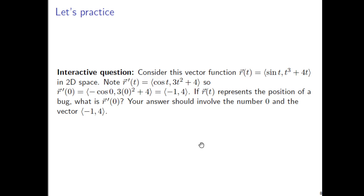Here's your interactive question. Consider the vector function sine of t comma t cubed plus 4t in two-dimensional space. Notice that r'(t) is cosine of t comma 3t squared plus 4. So r'(0) is equal to negative cosine of 0 comma 3 times 0 squared plus 4. It simplifies to negative 1 comma 4, to that vector. So if r(t) represents the position of a bug, then what is r'(0)? So what is this vector really? Provide an interpretation. Your interpretation should involve the number 0 and the vector negative 1, 4. That is when you write your answer, you should talk about the number 0 at some point. You should talk about the vector negative 1 comma 4.